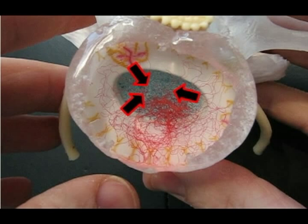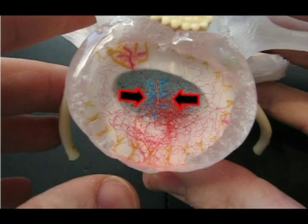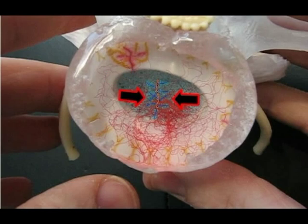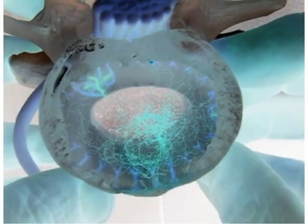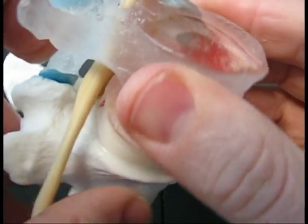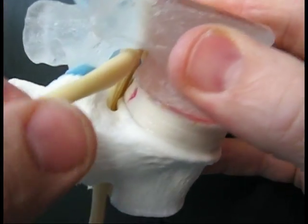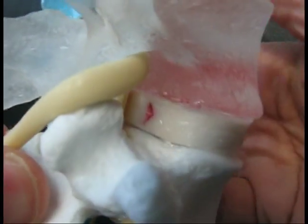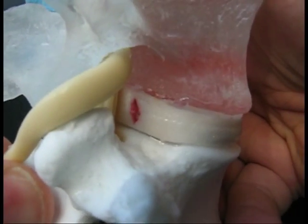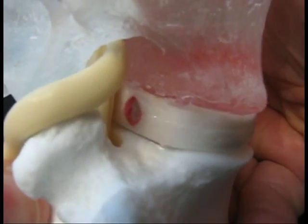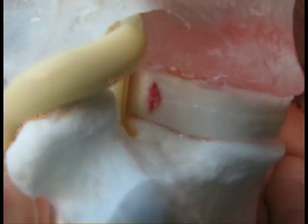With an annular tear, compressive loads can now demonstrate nuclear migration — posterior nuclear migration, most commonly posterior lateral — and nerve root encroachment.